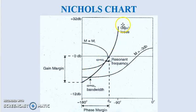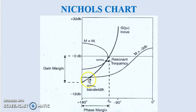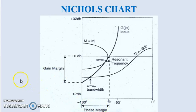The M contour at −3 dB is also shown. The intersection point where M = −3 dB and the G(jω) locus intersect gives the bandwidth ω_b. So we have identified M_R, ω_r, and ω_b. Now we need the gain margin and phase margin, for which we must find the phase crossover frequency and the gain crossover frequency.